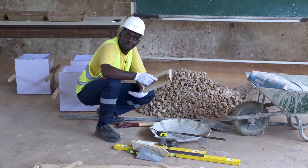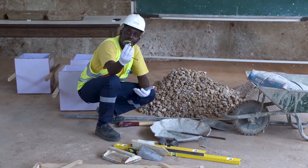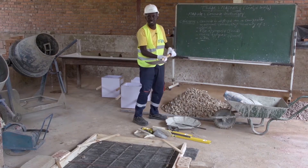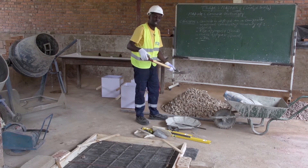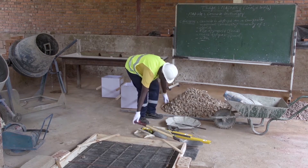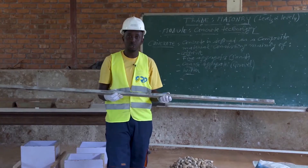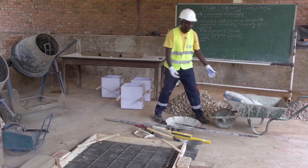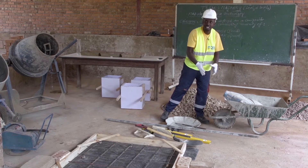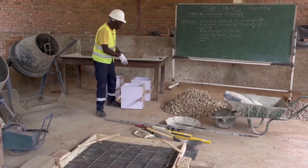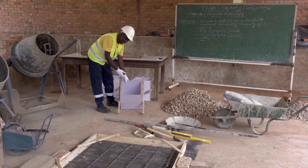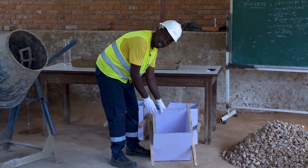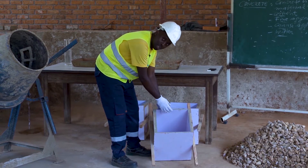We have also a wooden float, also used in floating. Then we have a tape measure, used for taking measurements. And we have the spade, which will be used for picking the materials and sometimes in the mixing of concrete. We have a straight edge, used for screeding operations or for leveling the concrete surface. Then we have the wheelbarrow, used for carrying and transporting concrete. And we have also the gauge box — this is a wooden gauge box, a standard one — which will be used for measuring the materials of concrete in the batching process.